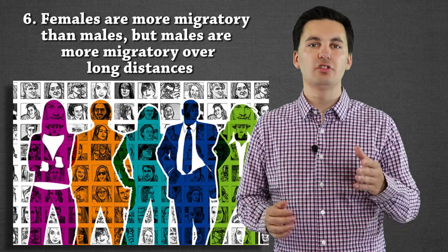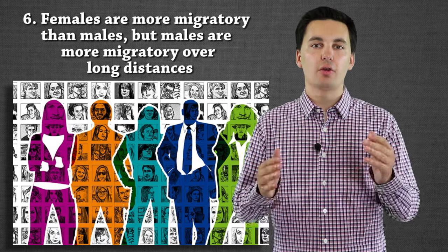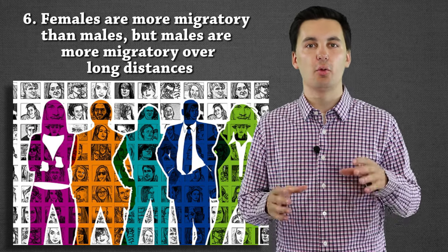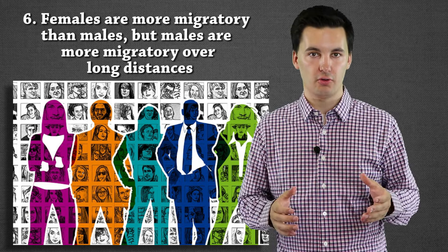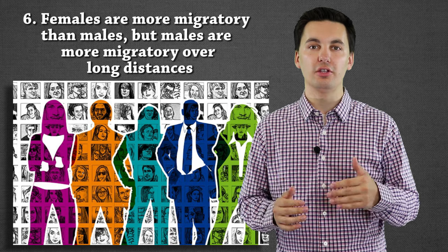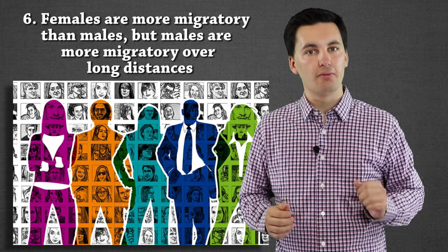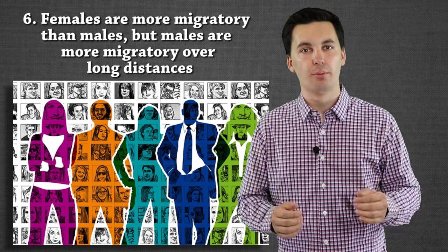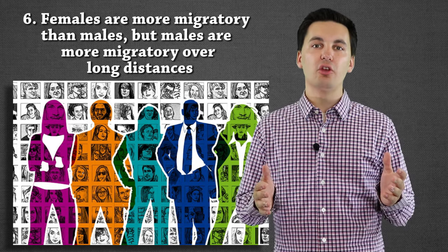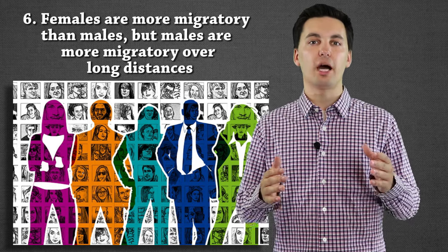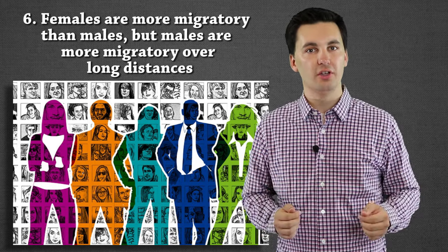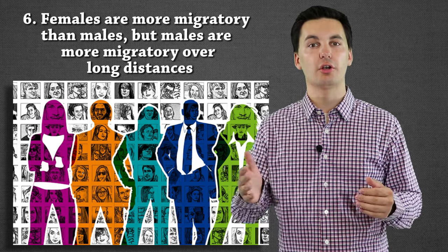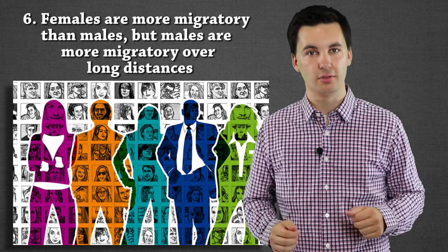The next law looks at gender. Ravenstein noticed that females are more likely to migrate within a country's borders, moving around over shorter distances. However, when it came to crossing longer distances — especially internationally — men were more likely to migrate. So females tend to migrate within their own country over shorter distances, while males are more likely to travel longer distances.